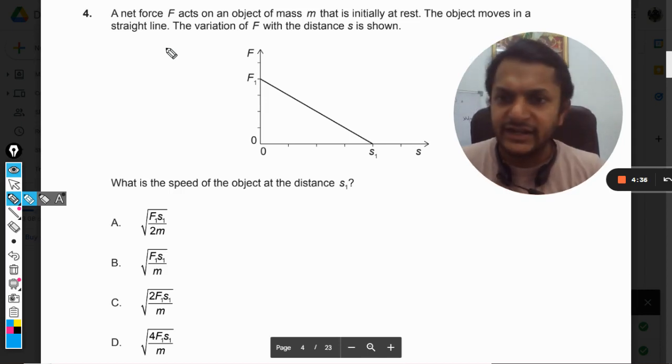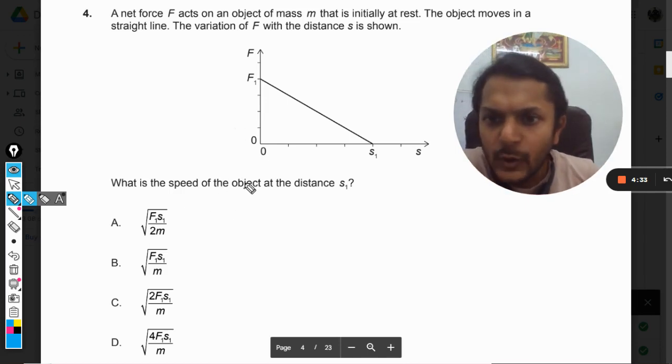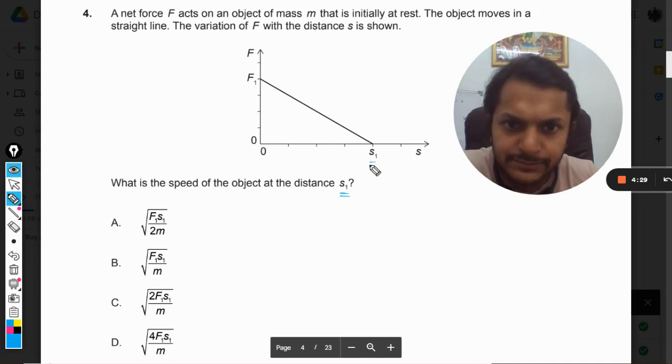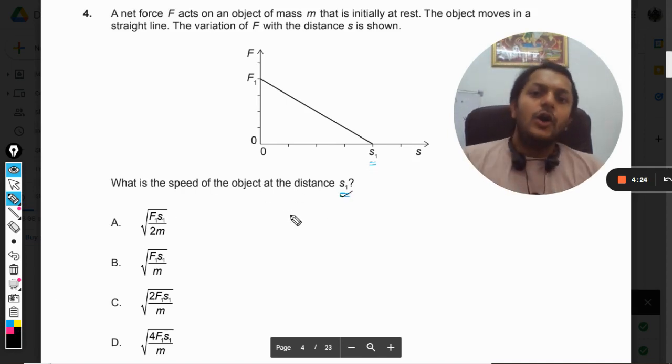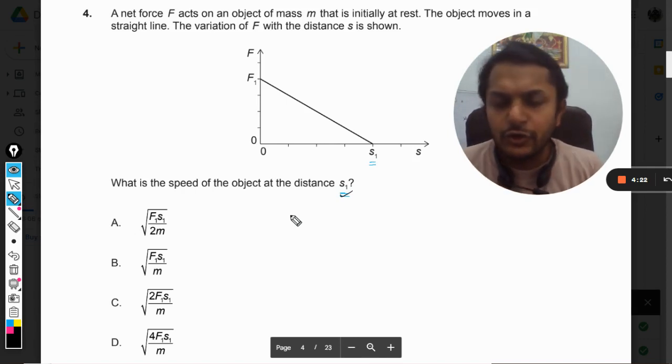What is the speed of the object at the distance s_1? We need to find the speed. Dear students, what we're going to do in this question is we will find the work done on the body by the force.